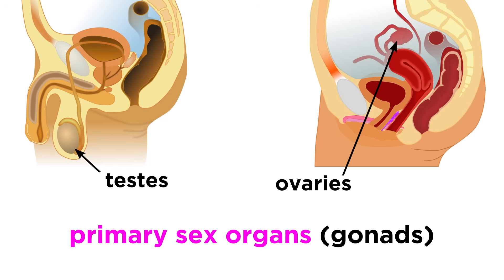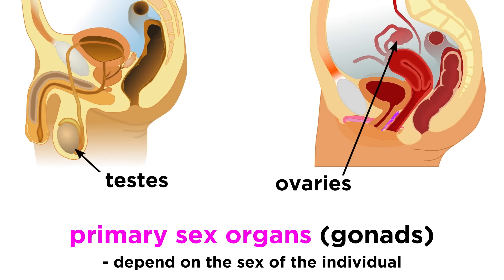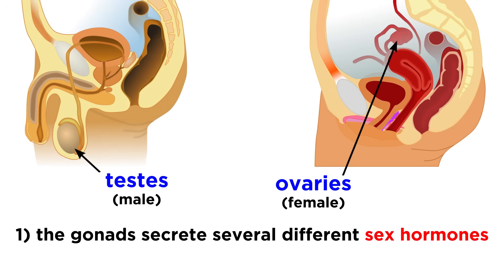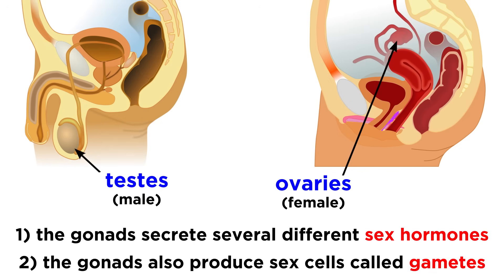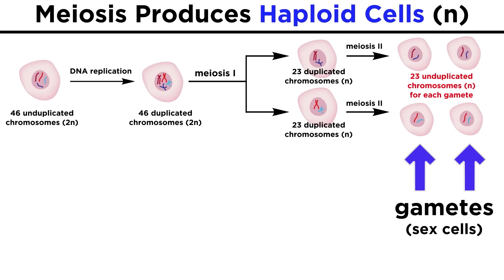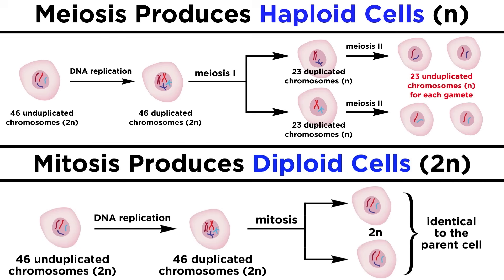When examining the reproductive system, the first things to mention are the primary sex organs, also known as gonads. Unlike the lungs, heart, liver, or stomach, which are all found in every human, these are organs which depend on the sex of the person. The male gonads are called the testes, and the female gonads are called the ovaries. The purpose of the gonads is to secrete several different sex hormones, and also to produce sex cells called gametes. Gametes are haploid cells that are the products of meiosis, rather than the diploid cells found elsewhere in the body, which are the products of mitosis.